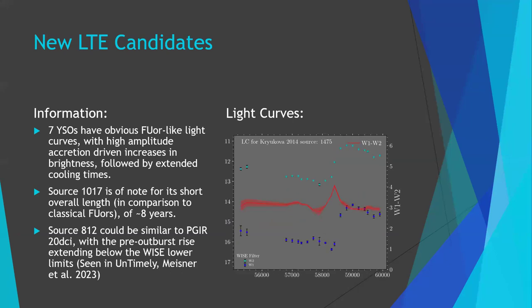Source 1475 is why we were originally calling these FUOR candidates — Carlos took a spectrum of it and published a research note in a Korean national journal. That was the unfortunate occasion where we forgot to tell each other what we were working on and accidentally came up with the same target twice. But source 1475 has an obvious FUOR spectrum, which gives us hope that the others will too — telescope spectroscopic data hopefully incoming soon.